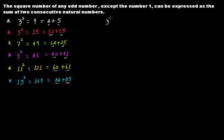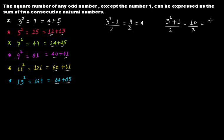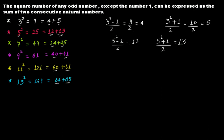For n = 3: (3² − 1) ÷ 2 = (9 − 1) ÷ 2 = 8 ÷ 2 = 4, which is the first number. And (3² + 1) ÷ 2 = (9 + 1) ÷ 2 = 10 ÷ 2 = 5, which is the second number. For n = 5: (5² − 1) ÷ 2 = (25 − 1) ÷ 2 = 24 ÷ 2 = 12, and (5² + 1) ÷ 2 = (25 + 1) ÷ 2 = 26 ÷ 2 = 13.